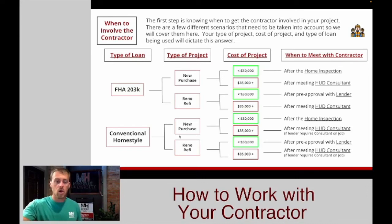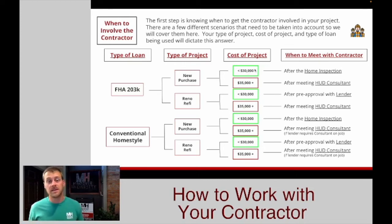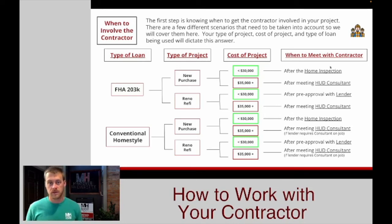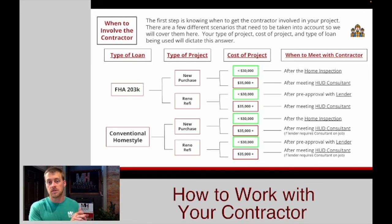You can use this grid to break down what type of project you're working on. For FHA 203k, new purchase — if the price is under $30,000, then there won't necessarily be a HUD consultant. In this case, the contractor will come right after the home inspection, so we know all the issues with the house and the contractor can make sure those are on the bid.